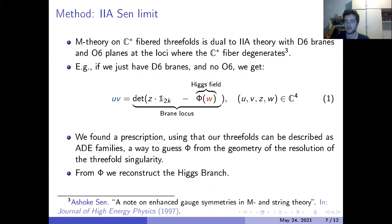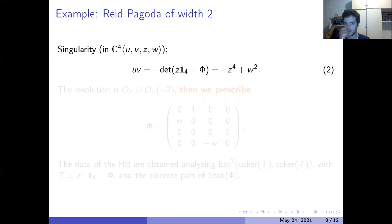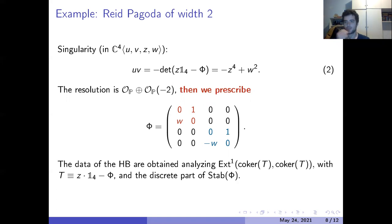Let me do an example of what I just said. We start with the Reid pagoda with two, that is the following hypersurface in C4. The resolution is this rank two vector bundle over P1, and by our prescription we analyze this geometry and we produce this Higgs field. Then we can analyze the data of the Higgs branch. In particular, these stabilizers are nothing but the base change from the left and from the right on this matrix Φ.